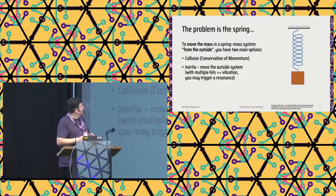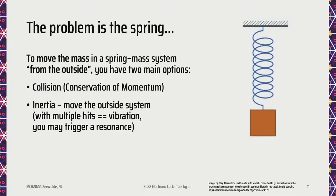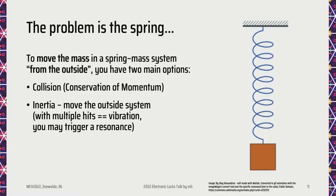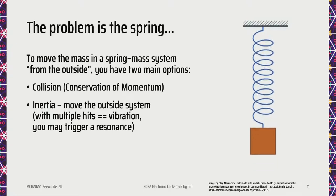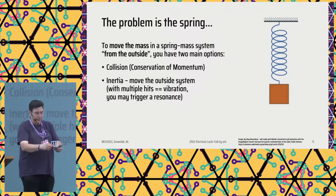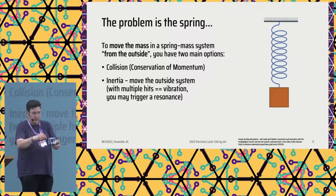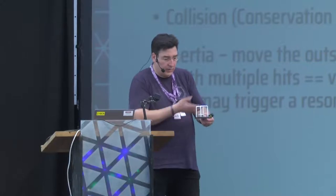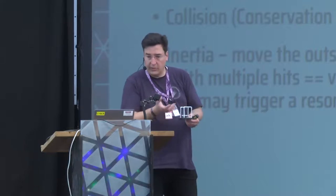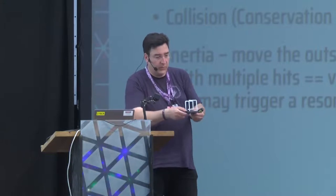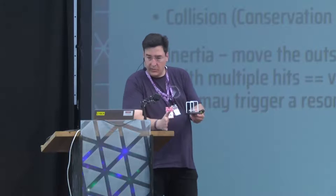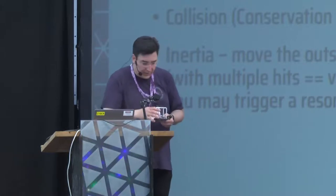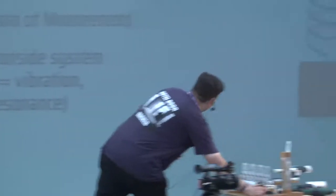But now we know it is the spring that is the problem — it's not the motor or solenoid itself. This blocking mechanism is typically a spring and mass system. If you want to do something from the outside, you can just hit it and a collision happens. You know Newton's Cradle — you hit from the outside, and if there are collisions, the energy will be transferred through conservation of momentum. The other thing you can do if you cannot reach it directly is use inertia — just hit it from the side and it will still start moving. And if you hit it multiple times, there will be a resonance frequency, so you may actually be able to hit it even harder.